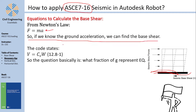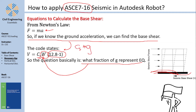The ASCE 7 code states that the base shear V = Cs × W, from equation 12.8-1. Section 12.8 covers the Equivalent Lateral Force method. ASCE 7 approaches base shear as a fraction of the gravity loads — since M × A is a force, Cs × M × G means the code is asking how many Gs are being applied on the structure, or equivalently, what fraction of the structure's weight represents the seismic force.